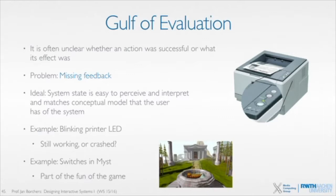Now let's go to the gulf of evaluation specifically. A great example is printers. You've sent a job to the printer, you walk up, and you see a blinking green LED. On the level of perception, no problem — you can clearly see that LED blink. But then comes interpretation: what does it mean? Does it mean the job is 80% printed and coming out any second? Or does it mean it hung on a large PostScript command, or the buffer memory is full, or it's out of paper? You need to understand what the feedback means — that's the interpretation phase — and then determine whether it's leading toward the goal you were aiming for.